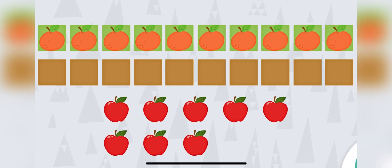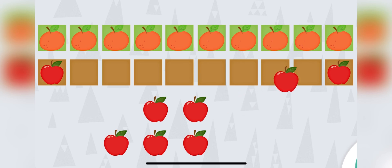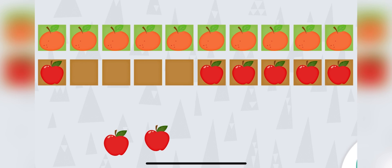Drag eight fruits to the bottom squares. One, two, three, four, five, six, seven, eight. You dragged eight fruits to the bottom squares.